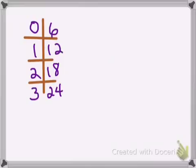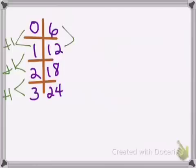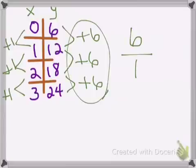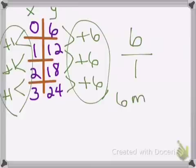For the second one, we're looking for patterns. Here, I see plus 1, plus 1, plus 1. On this side, I see plus 6, plus 6, plus 6. So if this is our xy, we're going to have the 6 on top and the 1 on bottom. You just straight put this on the top and this on the bottom, and that's going to be 6 meters per 1 second.